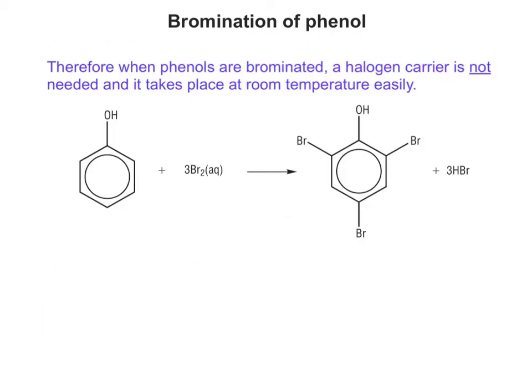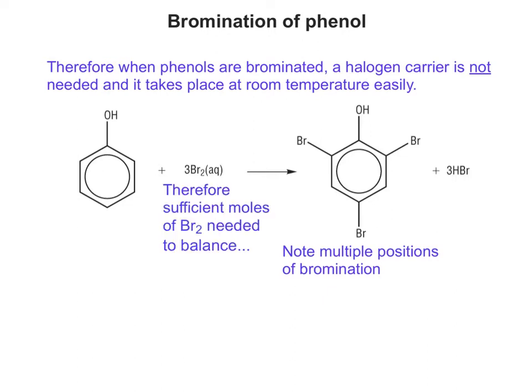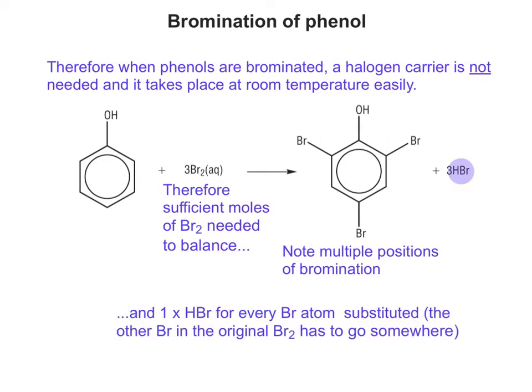When we brominate a phenol, a halogen carrier isn't needed and it takes place at room temperature easily. You can see clearly that you get multiple brominations around the ring. Obviously you need sufficient moles of bromine to balance this, and you have to have one HBr for every bromine atom that's substituted. So because there are three in this case, that must mean three hydrogens have been replaced, and therefore they have to go and react with something.